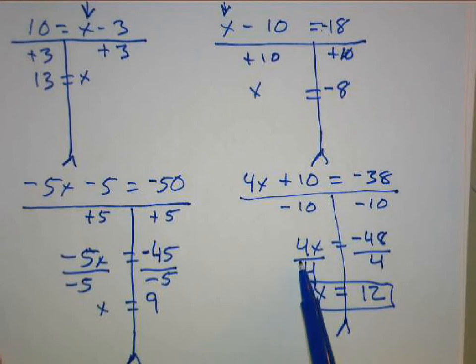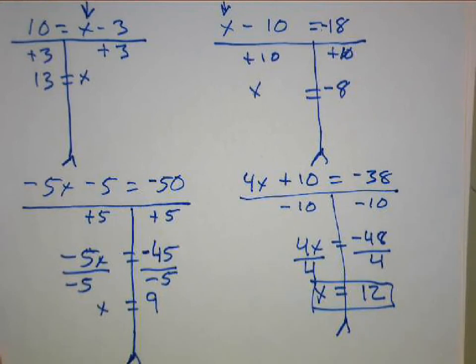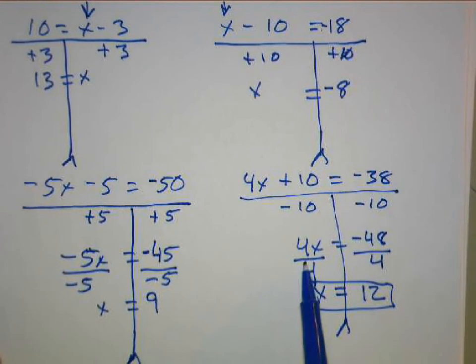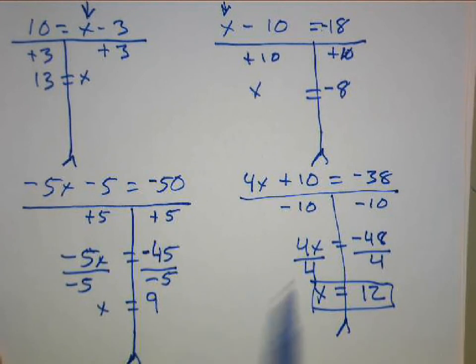And the third thing we want to do is remember to separate the coefficient from the variable using division or multiplication depending on how they're attached. So you're going to undo multiplication with division and undo division with multiplication. Alright, good luck. See you in class.